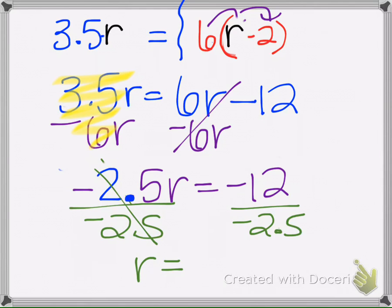So R equals, so we're going to take our calculator and do negative 12 divided by negative 2.5 is 4.8.